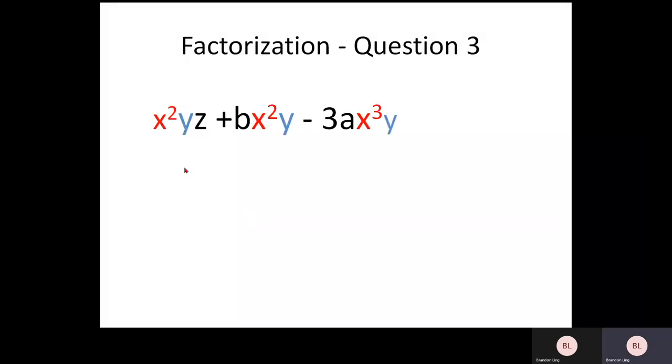Question three. Here you have X squared YZ plus BX squared Y minus 3AX cubed Y. So in fact, there are two common terms here which you can pull out. The first one will be the X squared. And the second one will be the Y.